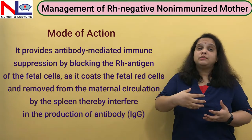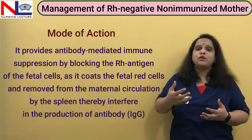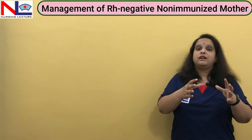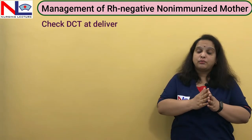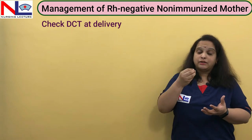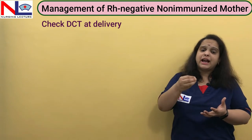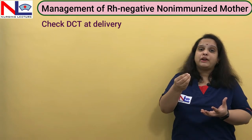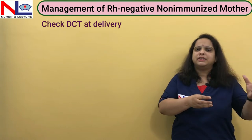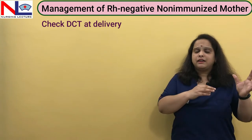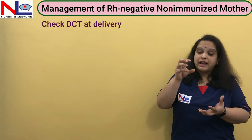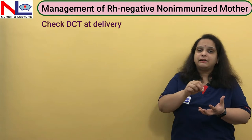After this, we allow the pregnancy to continue till term, checking the ICT two-weekly or monthly. Once the fetus is delivered, we can directly check the fetal blood group using a cord blood sample. We also perform a Direct Coombs Test (DCT), which indicates the presence of maternal antibodies that have crossed the placenta and are detectable in fetal blood.